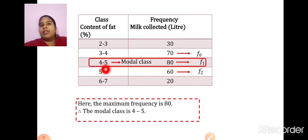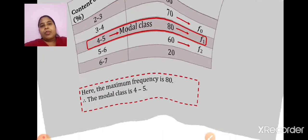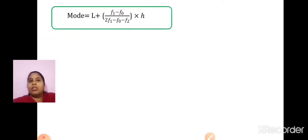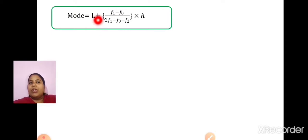What is the value of H? H is the width — upper limit minus lower limit. H is 5 minus 4, that is 1. So, all values are given in the table. Write the formula and put it in a box — this is how you will present it even in a board exam. Mode is equal to L plus F1 minus F0 upon 2F1 minus F0 minus F2 into H.